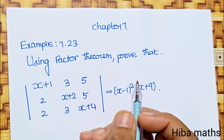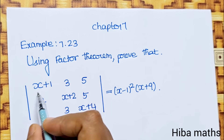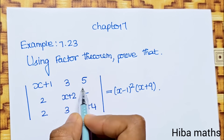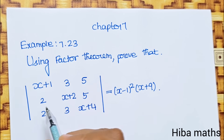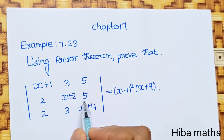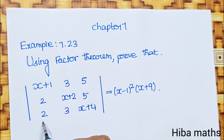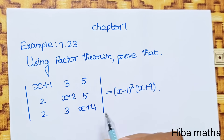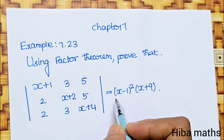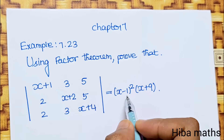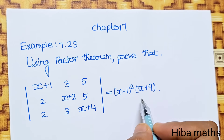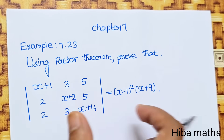Using Factor Theorem, prove that the determinant with rows (x+1, 3, 5), (2, x+2, 5), (2, 3, x+4) is equal to (x-1)² into (x+9).